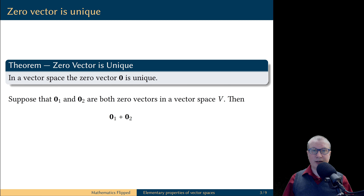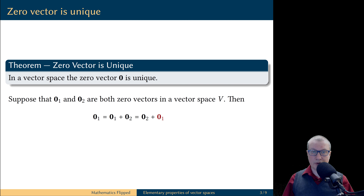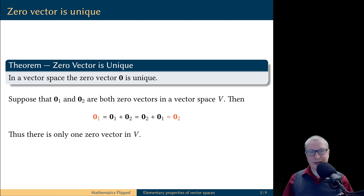Let's assume we have two zero vectors in the vector space V, both satisfying the properties of the zero vector. We look at the first zero vector plus the second zero vector. Using the assumption that the second zero vector is the zero vector, this sum equals the first zero vector. On the other hand, vector addition is commutative, so we can switch the order. Using the assumption that zero-one is the zero vector, zero-two plus zero-one equals zero-two. Looking at the beginning and the end, zero-one equals zero-two, proving there is only one zero vector.